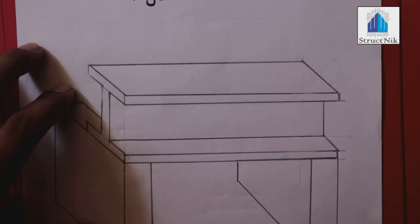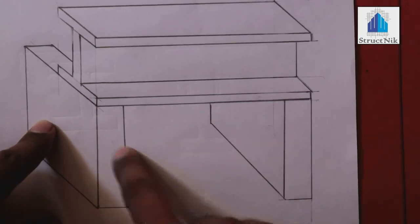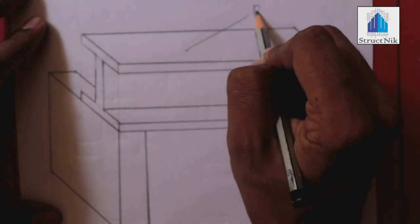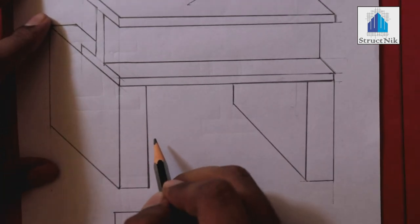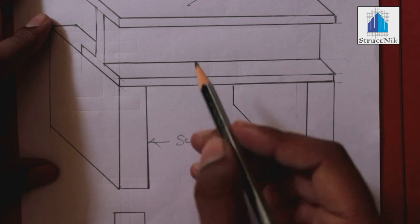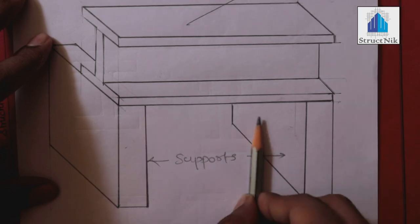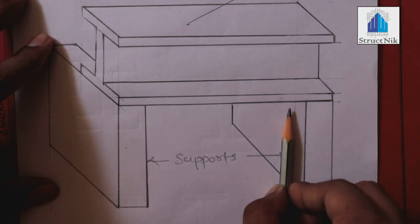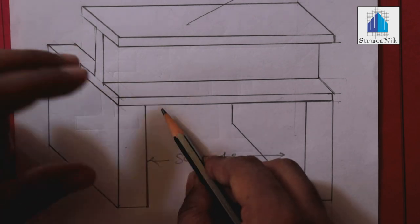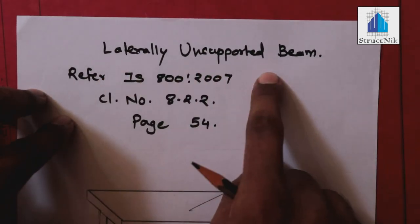For a laterally unsupported beam — basically, imagine two walls with a beam kept on top, which is an I-section. The walls provide support for this beam. Now, if we have some twisting moment or rotational moment at any end, this beam is simply supported and will undergo torsion. So we can call this a laterally unsupported beam.